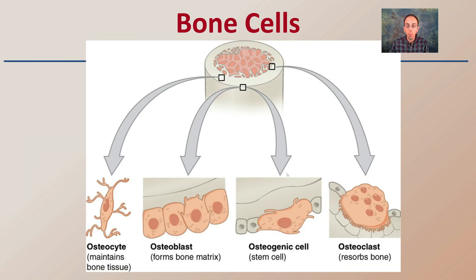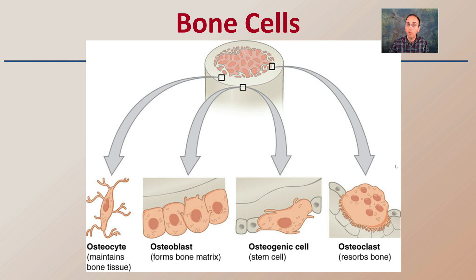When looking at these bone cells, keep in mind that bone is constantly being reformed and constantly being broken down, no matter your age. The age of the individual will influence the rate that this occurs. We have the osteocyte, which maintains bone tissue; the osteoblast, which forms the actual matrix; the osteogenic cell, which is the stem cell forming many of the rest; and the osteoclast, which is reabsorbing bone material — all ideally occurring in a nice balance.